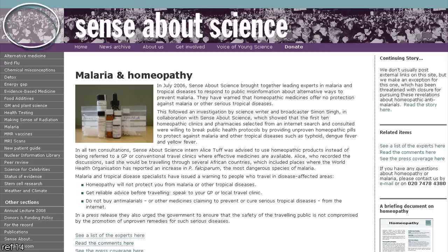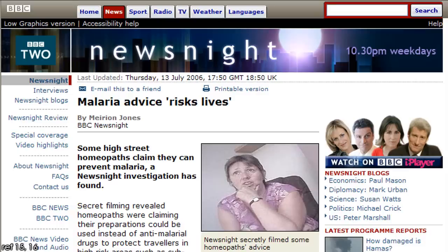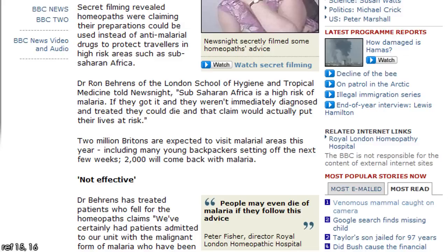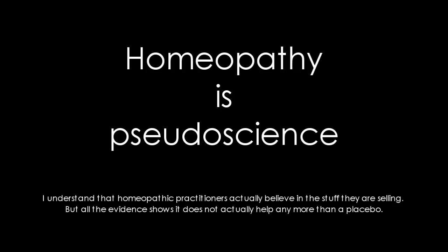In 2006, a group called Sense About Science sought advice from ten homeopathic clinics and pharmacies about travel to tropical locations where malaria is widespread. In each case, the homeopaths were recommending unproven remedies instead of directing them to a general practitioner who can give them scientifically verified preventative drugs. The malaria virus kills over a million people each year and a placebo is definitely not going to help.